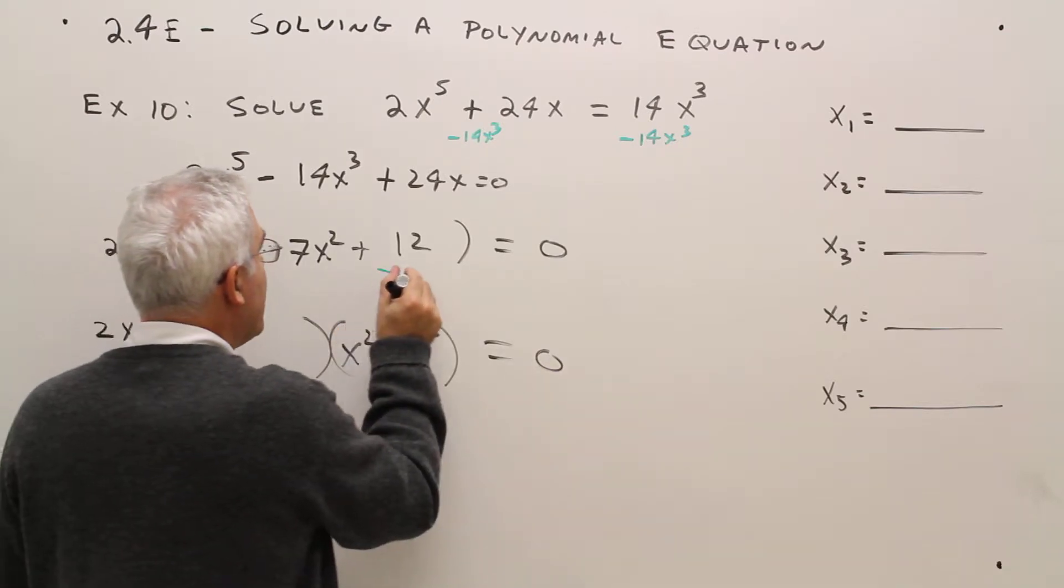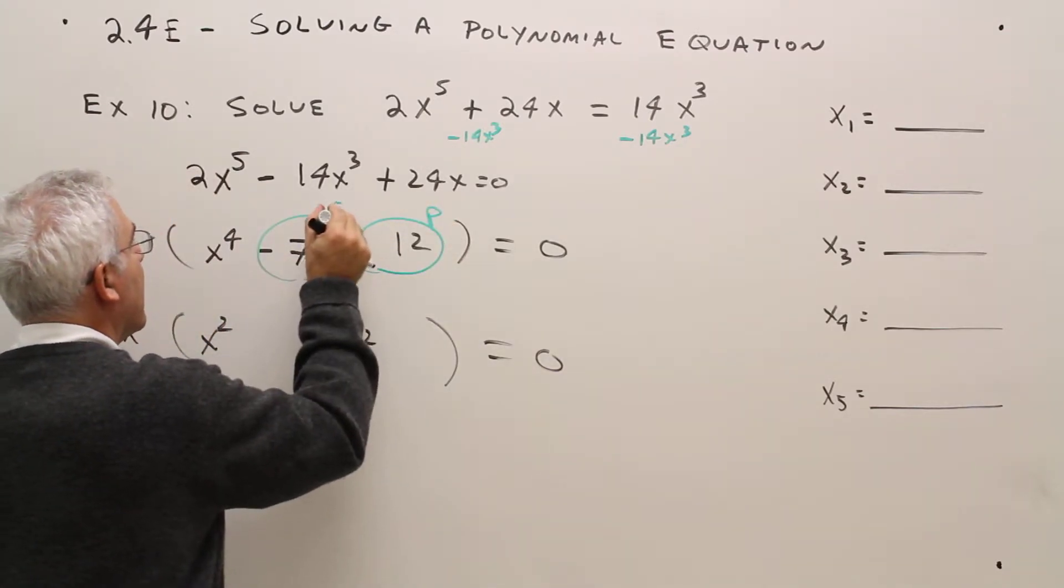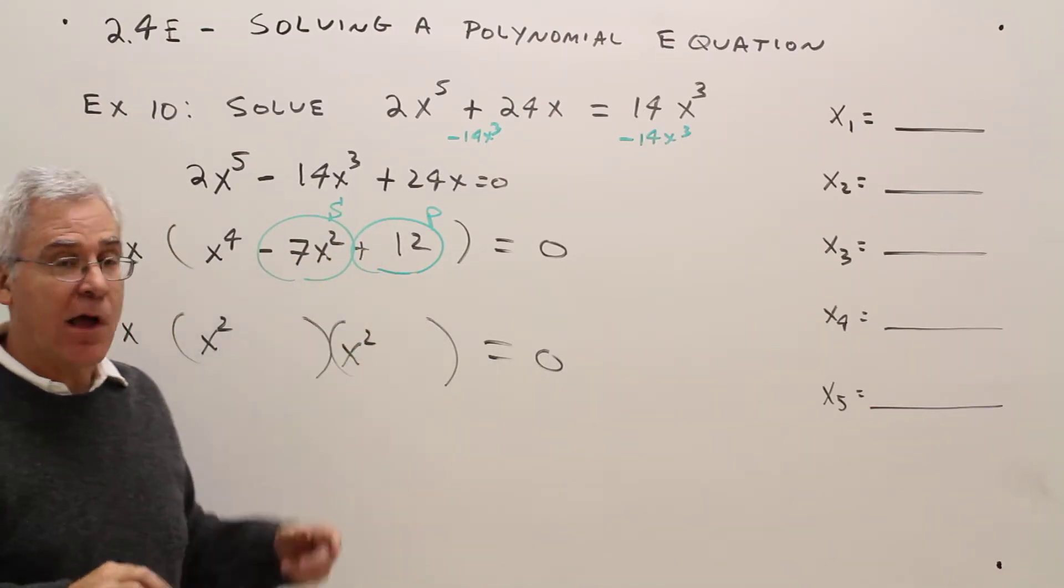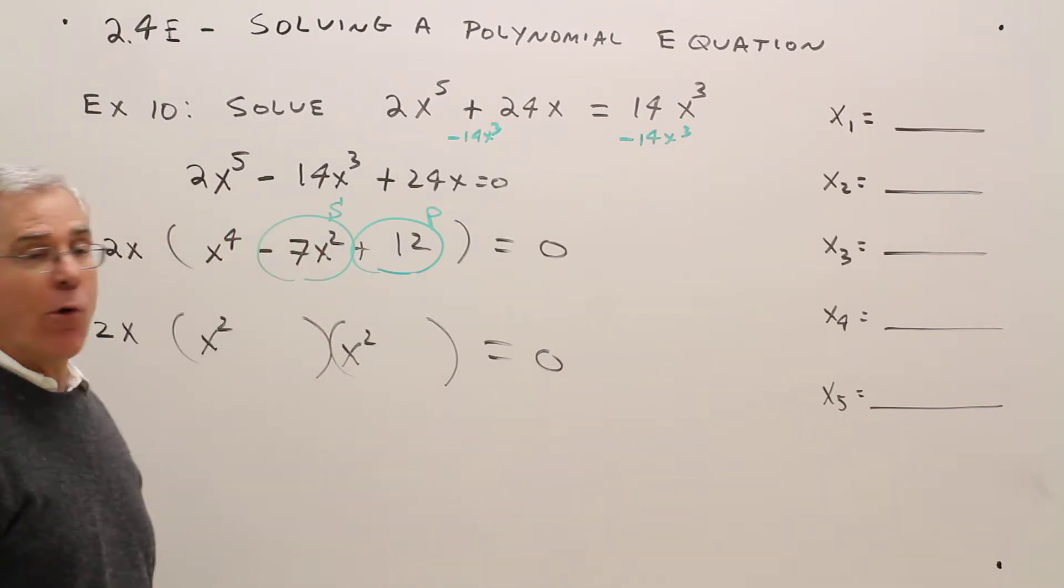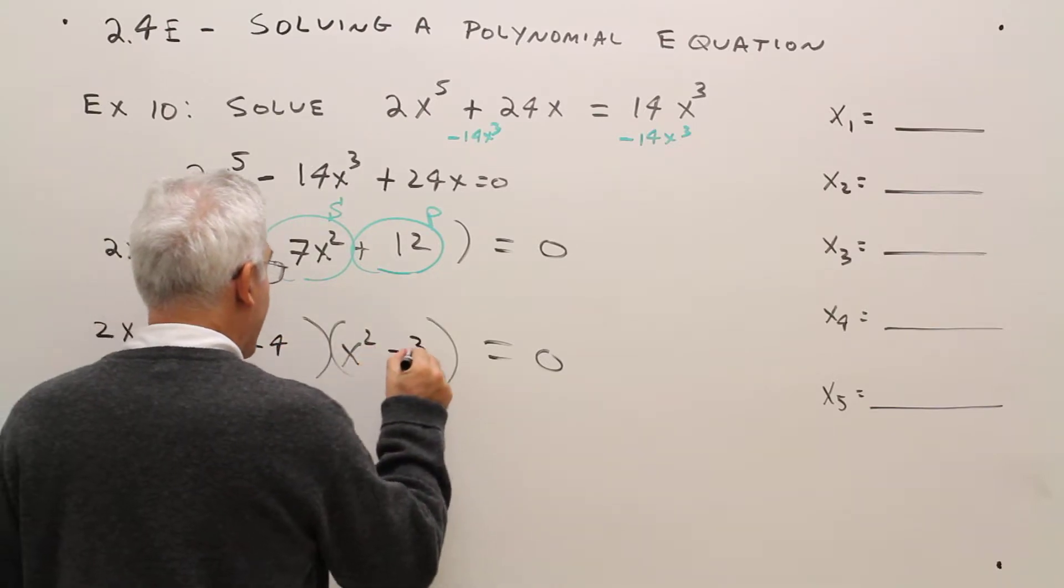Once again, I'm looking for two numbers that have that product and that sum. Positive product, negative sum must be negative negative. I'm thinking negative four and negative three. So minus four and minus three.